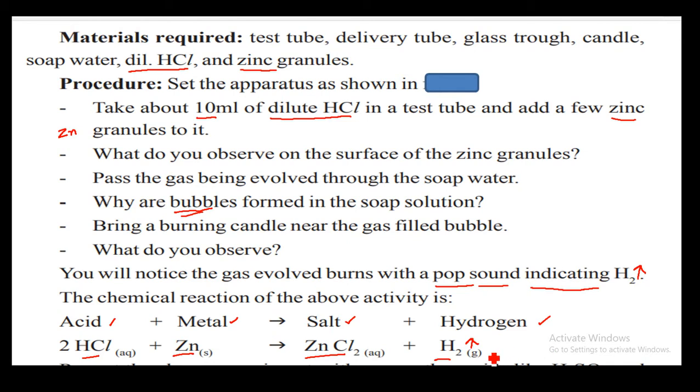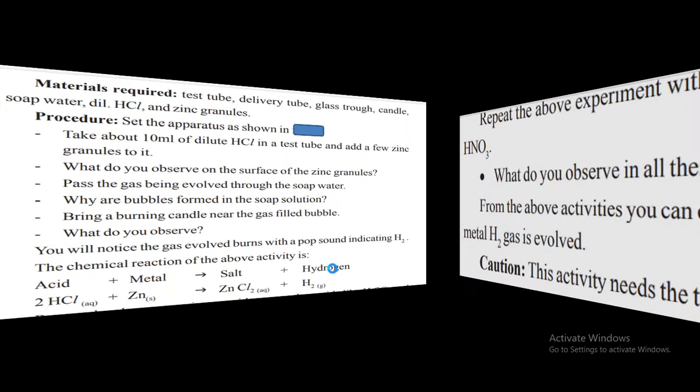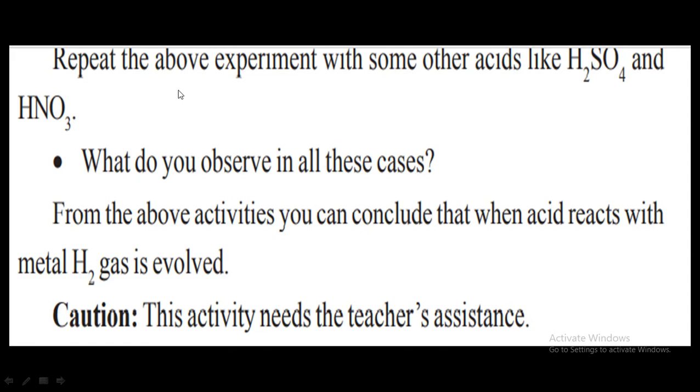To denote gas, we use an upward arrow mark. Repeat the above experiment with some other acids like H2SO4, HNO3, or CH3COOH. With these acids, we observe that H2 gas is evolved.